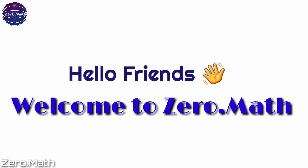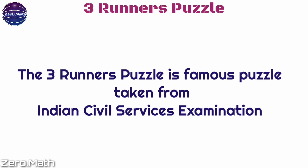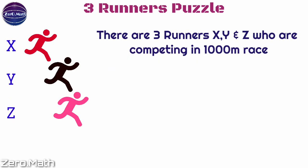Hello friends, welcome to your channel Zero Math. The three runners puzzle is a famous puzzle taken from the Indian Civil Service examinations. The puzzle is: there are three runners X, Y, and Z who compete in a thousand meter race. Each runner runs with different uniform speed.